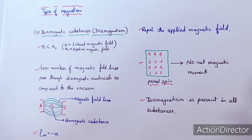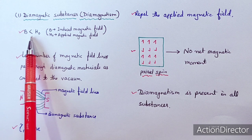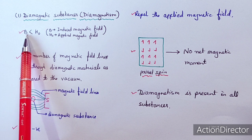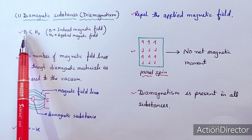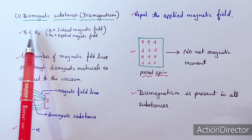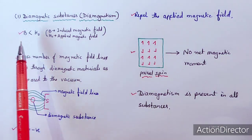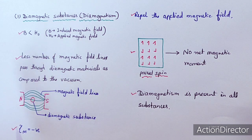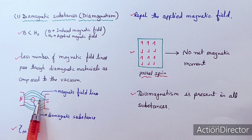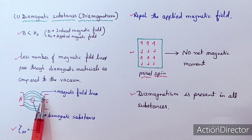First we will discuss about the diamagnetic substances. We have already studied about this in the previous lecture — that B, the induced magnetic field, is smaller than the applied magnetic field, so the value of B upon H₀ will always be less than 1 for diamagnetic substances. This is the characteristic of a diamagnetic substance. When it is put in the magnetic field, less number of magnetic lines pass through the diamagnetic material than through the vacuum.